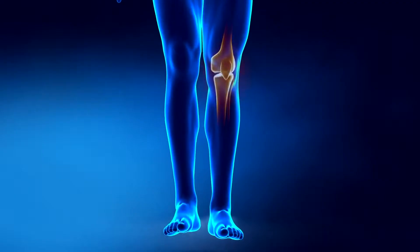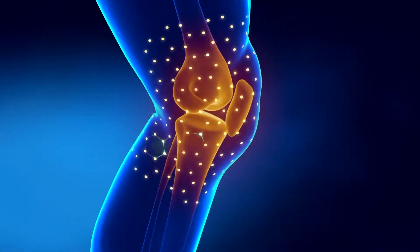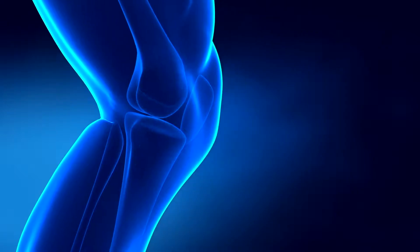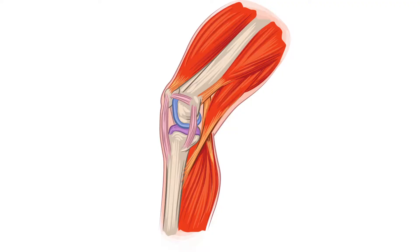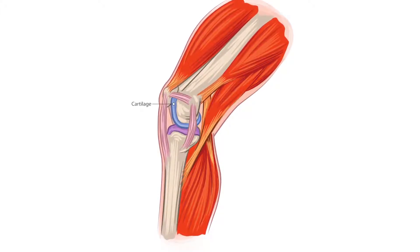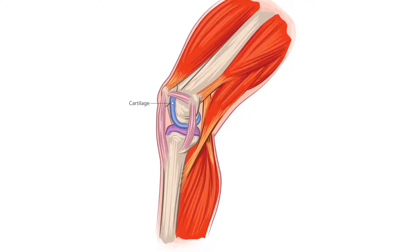The tissue of joints is composed of three main elements: cartilage, tendons and ligaments. First of all, let's look at cartilage. These are soft elastic tissues that sit between bones and act like shock absorbers, protecting them and stopping them damaging one another.